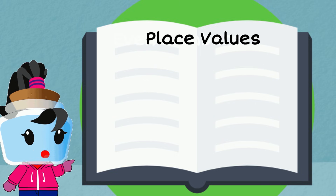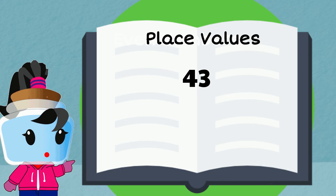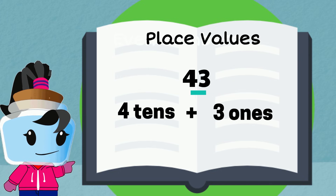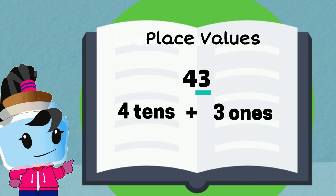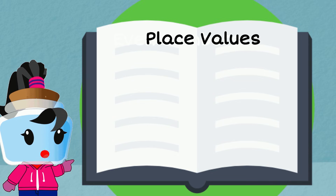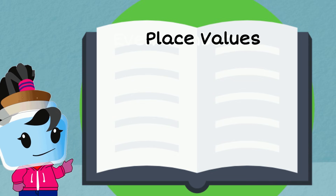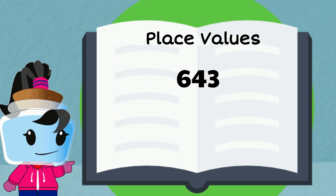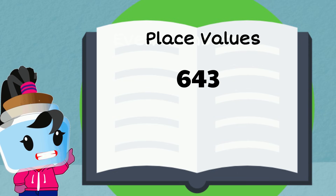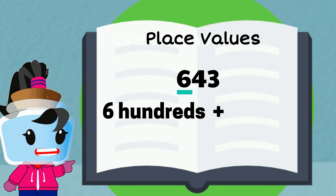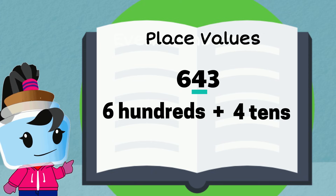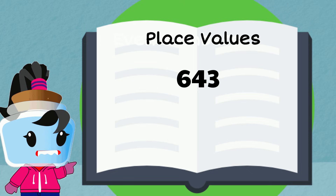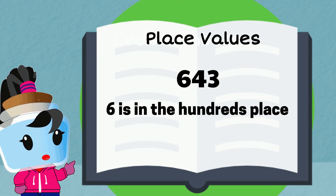In the number 43, we have four tens and three ones. Now if we add another number and make it 643, we'll have six hundreds, four tens, and three ones.